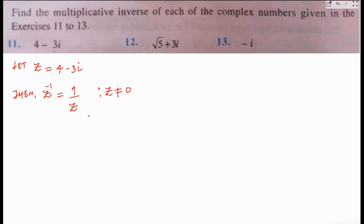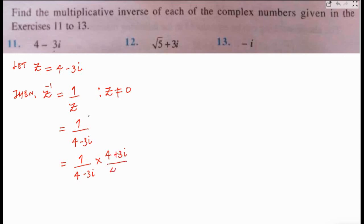That means the multiplicative inverse of the zero complex number does not exist. So if z equals 4 minus 3i, then z inverse equals 1 upon (4 minus 3i). Now we'll multiply and divide by the conjugate of z, which is 4 plus 3i.